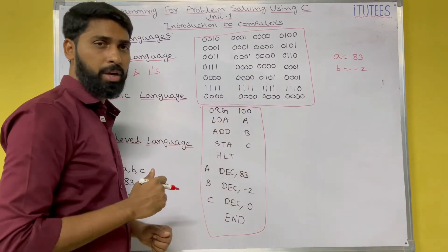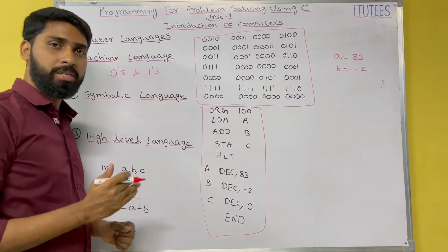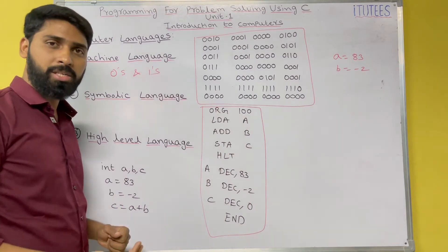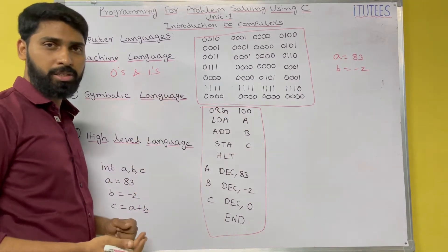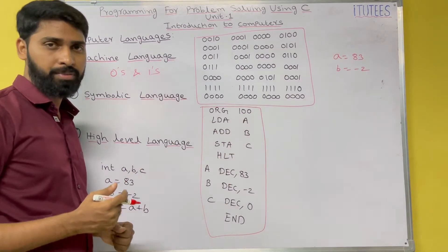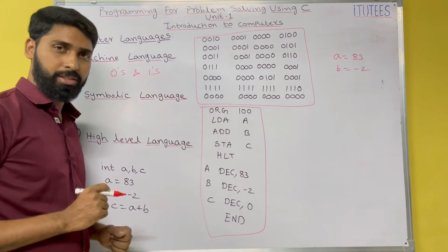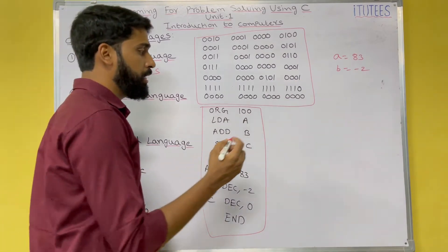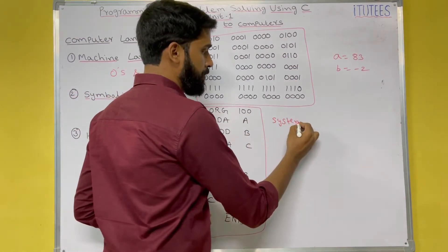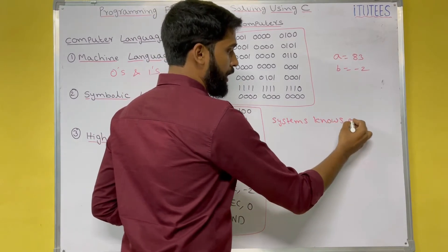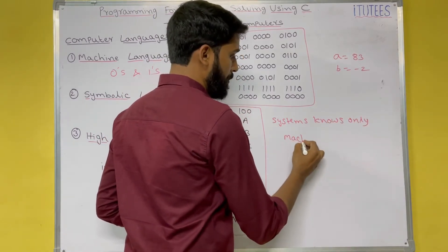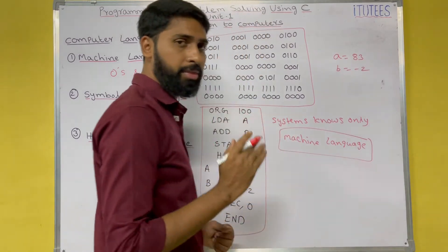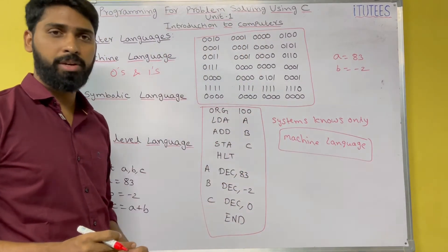At least when comparing to machine language, in symbolic language you are going to understand what operations you are going to perform — the same program. So what is symbolic language? Symbolic language consists of mnemonics and symbols to write a program. The advantage is that when comparing to machine language, symbolic languages are easy to understand and easy to write. But there is one disadvantage: the system knows only machine language. That means whatever language you use to give instructions, it must be converted into machine language.